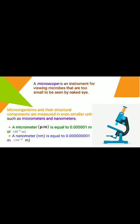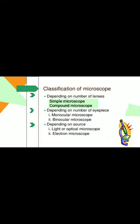Microorganisms and their structural components are measured in smaller units such as micrometers and nanometers. A micrometer is equal to 10 to the power of minus 6 meters, and a nanometer is equal to 10 to the power of minus 9 meters. Now we come to the classification of microscopes, divided into three categories.